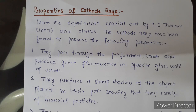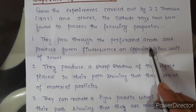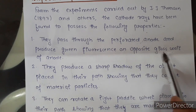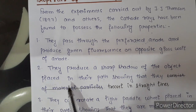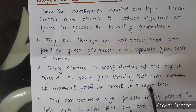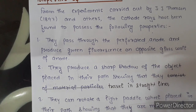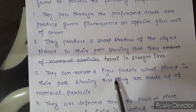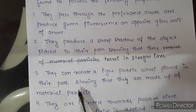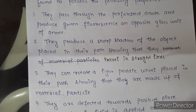Next is the properties of cathode rays. From various experiments carried out by J.J. Thomson in 1897 and others, cathode rays were found to possess the following properties. First, they pass through the perforated anode and produce green fluorescence on the opposite glass wall. Second, they produce a sharp shadow of any object placed in their path, showing that they travel in a straight line. Third, if a light paddle wheel is placed in their path, the wheel starts to rotate — meaning cathode rays are made up of material particles.